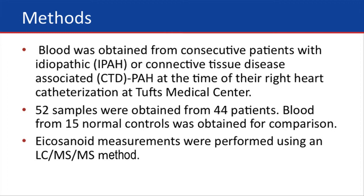Could you go over the methods and results of your study for our viewers? This is how we started the study. We looked at plasma from PAH patients, and we had four groups: idiopathic PAH patients who were naive for treatment — so they were not exposed to special PH-targeted therapies — scleroderma-related PH patients also not on therapy, and those two groups on therapy. We compared levels of different eicosanoids with those levels in the plasma of healthy controls.